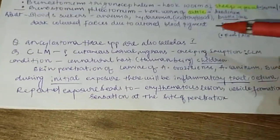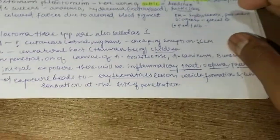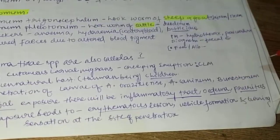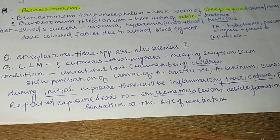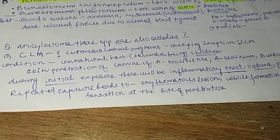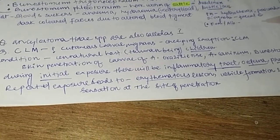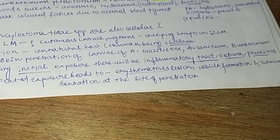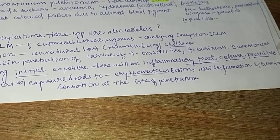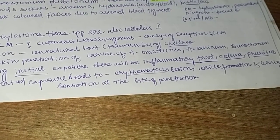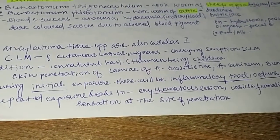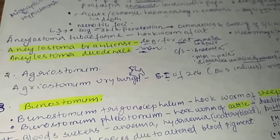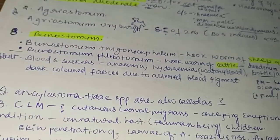During the initial exposure, there will be an inflammatory tract, edema, and pruritus. Repeated exposure will lead to erythematous lesions, vesicle formation, and burning sensation at the site of penetration. This is about cutaneous larva migrans and the genus Buenostomum.